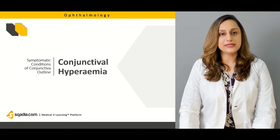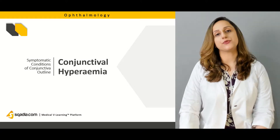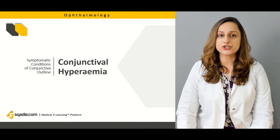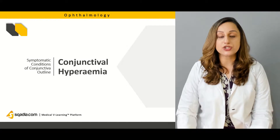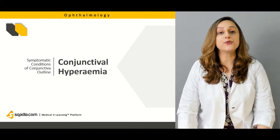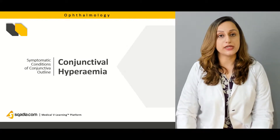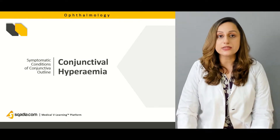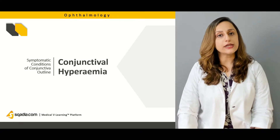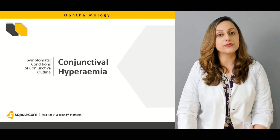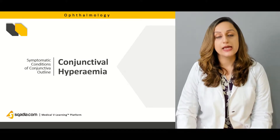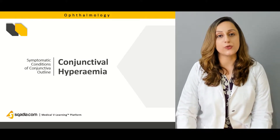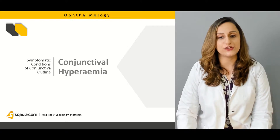Foremostly, we'll be discussing conjunctival hyperemia. There are a lot of conditions which result in the reddish hyperemic conditions of the conjunctiva — either it can be a transient phase or it can be a chronic and recurrent condition in the individual. We'll be discussing the differential diagnosis along with the management guidelines.